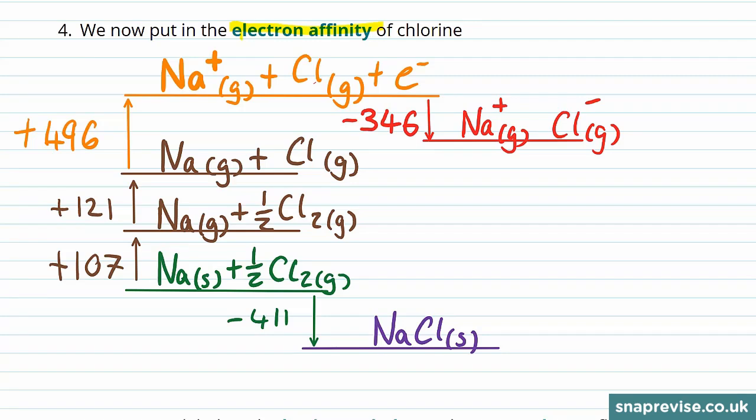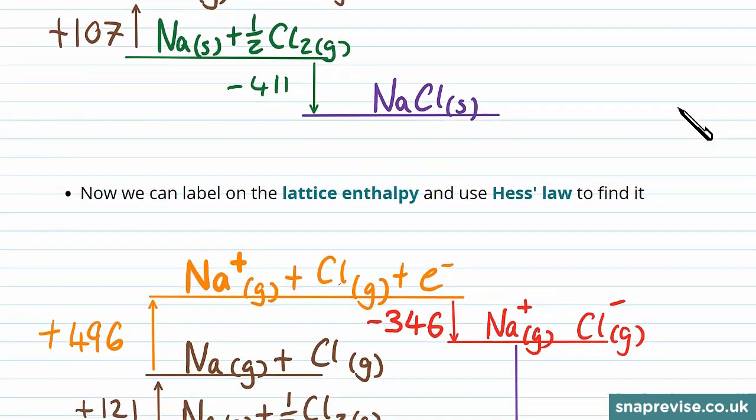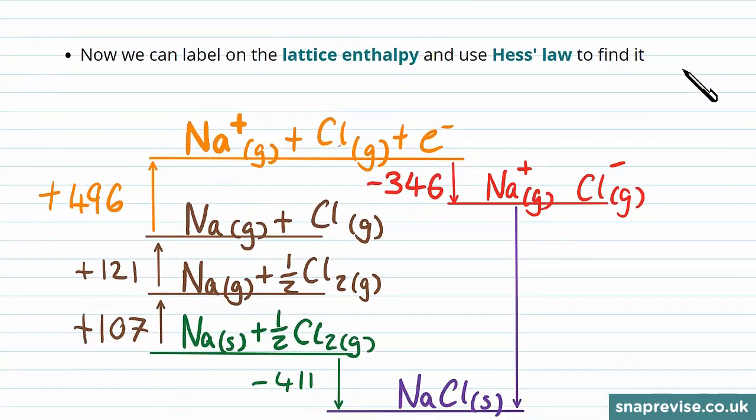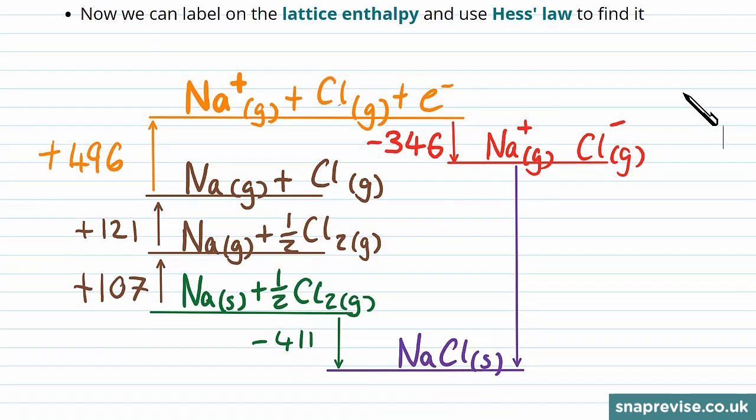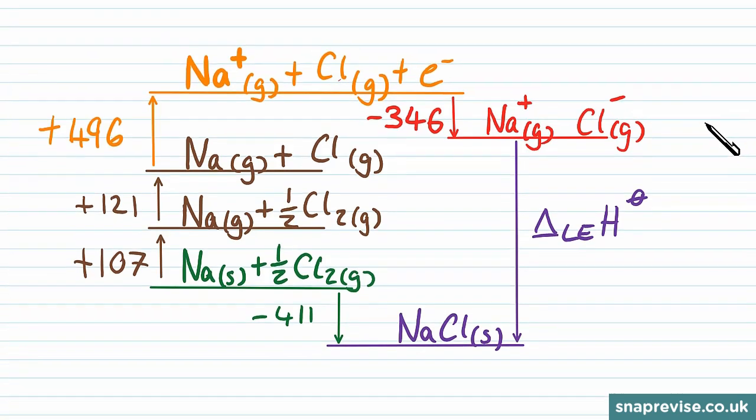We've now completed our cycle and we can label the final step that we're interested in, which is the lattice enthalpy, which has a symbol of delta LE H standard. And it's this point we can use Hess's law to find this value.